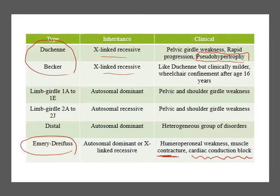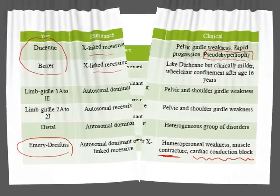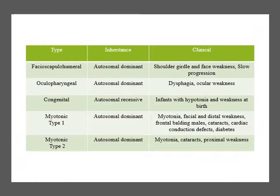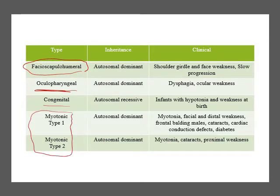Facioscapulohumeral muscular dystrophy does not have cardiac conduction abnormality; its characteristic feature is scapular winging. Oculopharyngeal muscular dystrophy is common in French Canadians from the Quebec district — it causes dysphagia and ocular weakness. There are also congenital muscular dystrophies and myotonic disorders. Dystrophia myotonica type 1 causes myotonia, facial and distal muscle weakness, frontal baldness, cataract, cardiac conduction defect, and diabetes. It also causes testicular atrophy. Type 2 has similar features but with proximal rather than distal weakness.